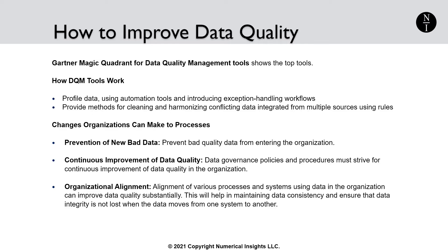In addition to the tools available in the market, changes to organizational processes can help in improving data quality. Organizational processes can target prevention of new bad data, continuous improvement of data, and organizational alignment. For prevention of new bad data, measures can be introduced to prevent bad quality data from entering the organization. These include a single source of data entry, effective data quality assurance, data governance, and approval processes. For continuous improvement of data quality, data governance policies and procedures must strive for continuous improvement, which may involve setting up processes and controls and defining data quality metrics. For organizational alignment, alignment of various processes and systems using data in the organization can improve data quality substantially, helping maintain data consistency and ensuring that data integrity is not lost when data moves from one system to another.